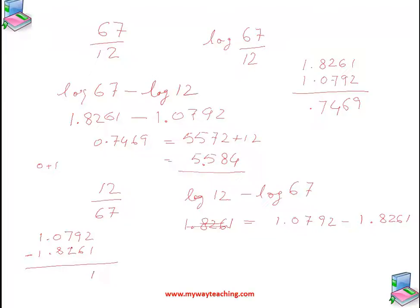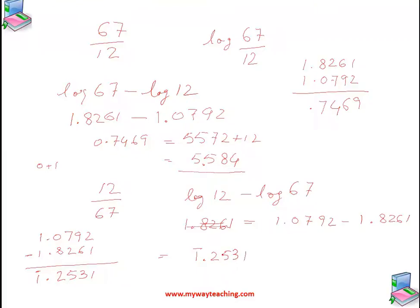Working through the subtraction of 1.0792 minus 1.8261: taking digit by digit, we get 2 minus 1 is 1, then borrowing as needed through the remaining digits, and 0 minus 1 for the integer part gives 1-bar. So the result is 1-bar .2531.